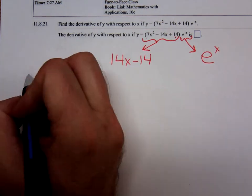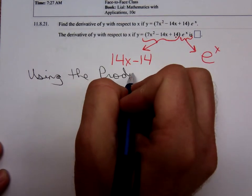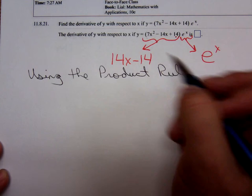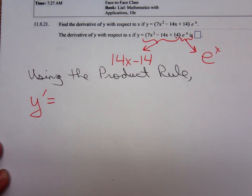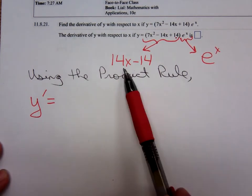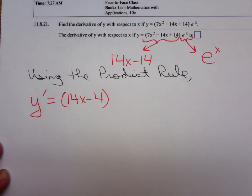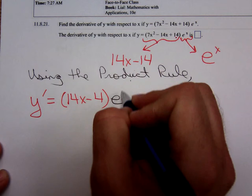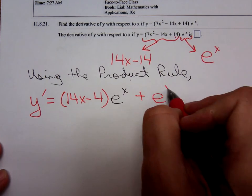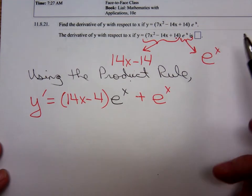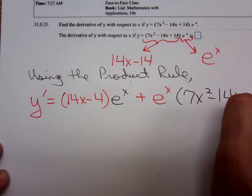So now using the product rule, y prime equals the derivative of the first, 14x minus 14, times the second, e to the x, plus the derivative of the second, e to the x, times the first one, which is 7x squared minus 14x plus 14.